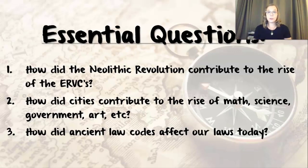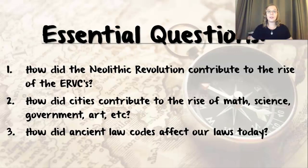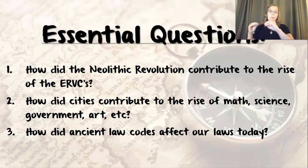First let's review some of our essential questions. We've learned about one and two already. Today we're going to get to number three, so we are going to talk about some ancient law codes finally. And law is going to permeate the rest of the year for us — it's going to come up again and again. Every civilization ends up coming up with a law code.